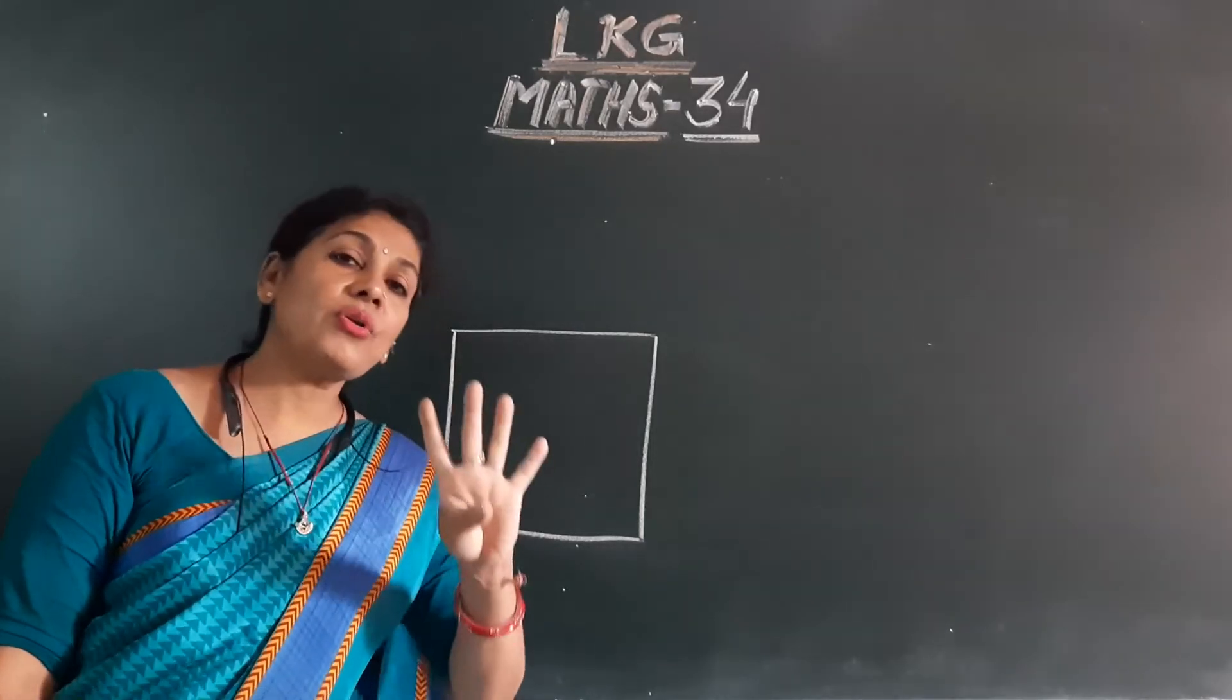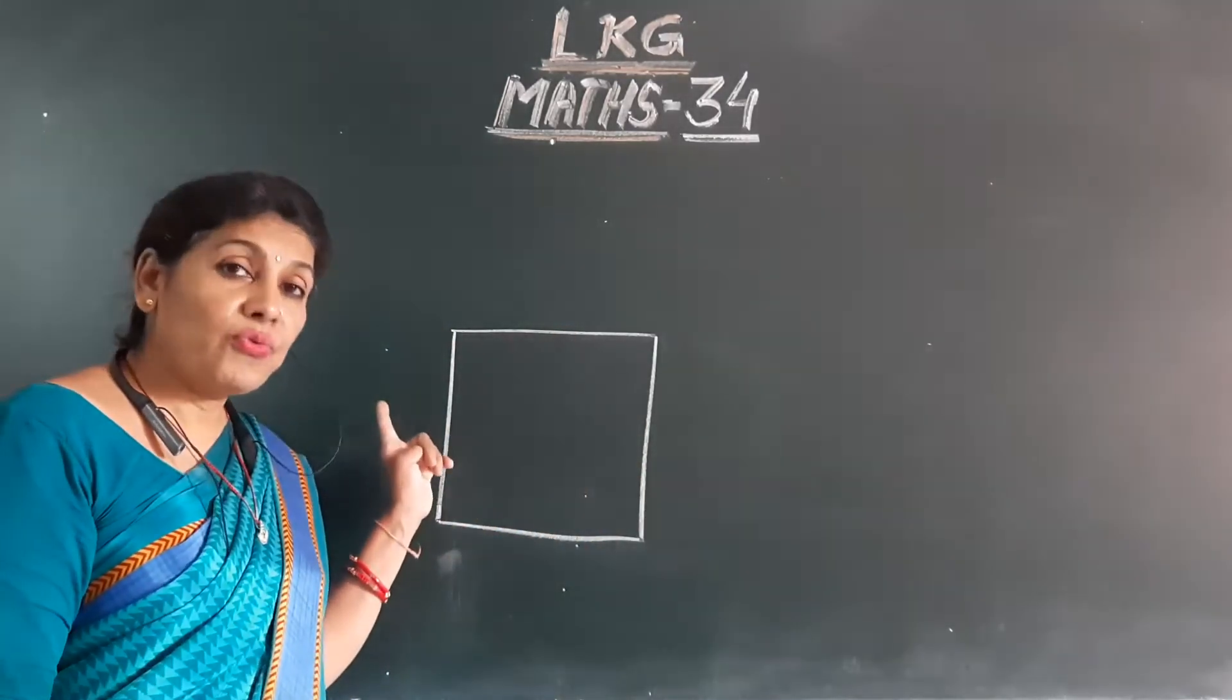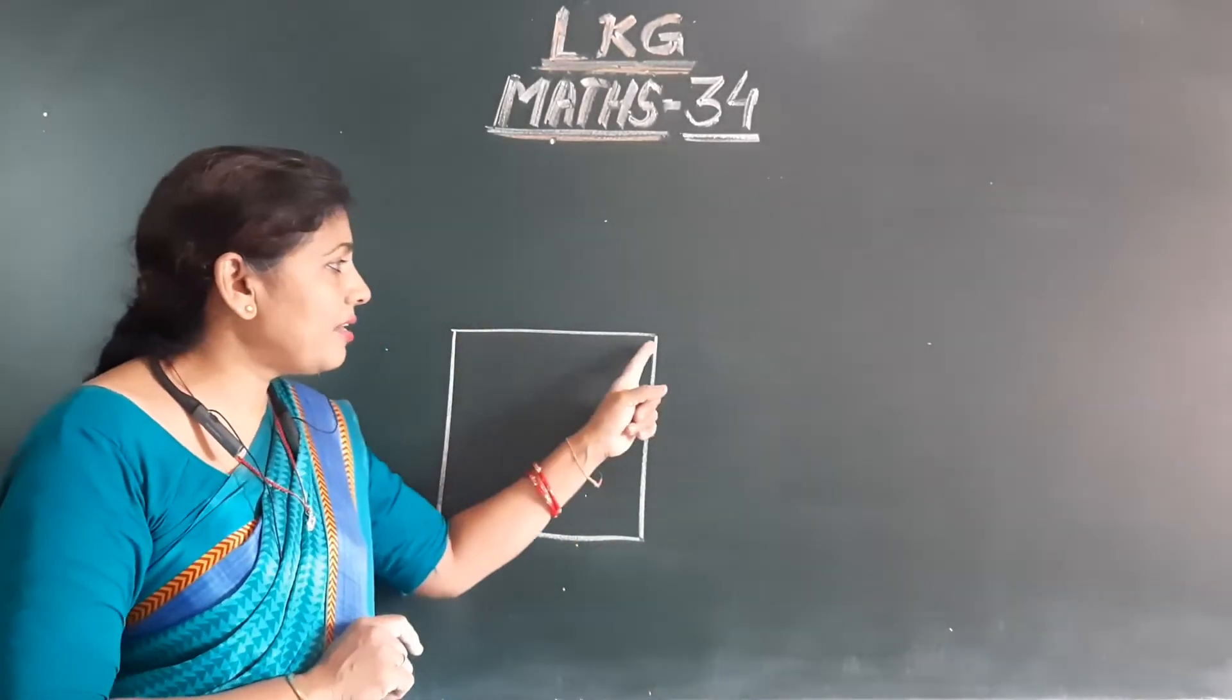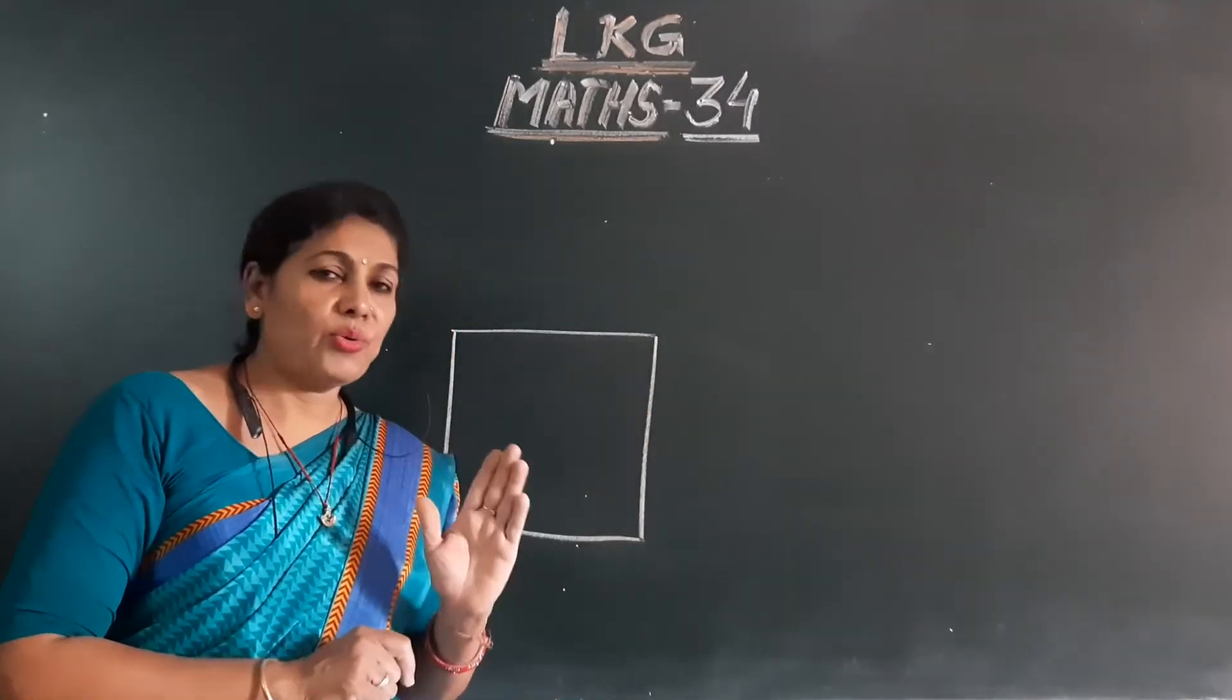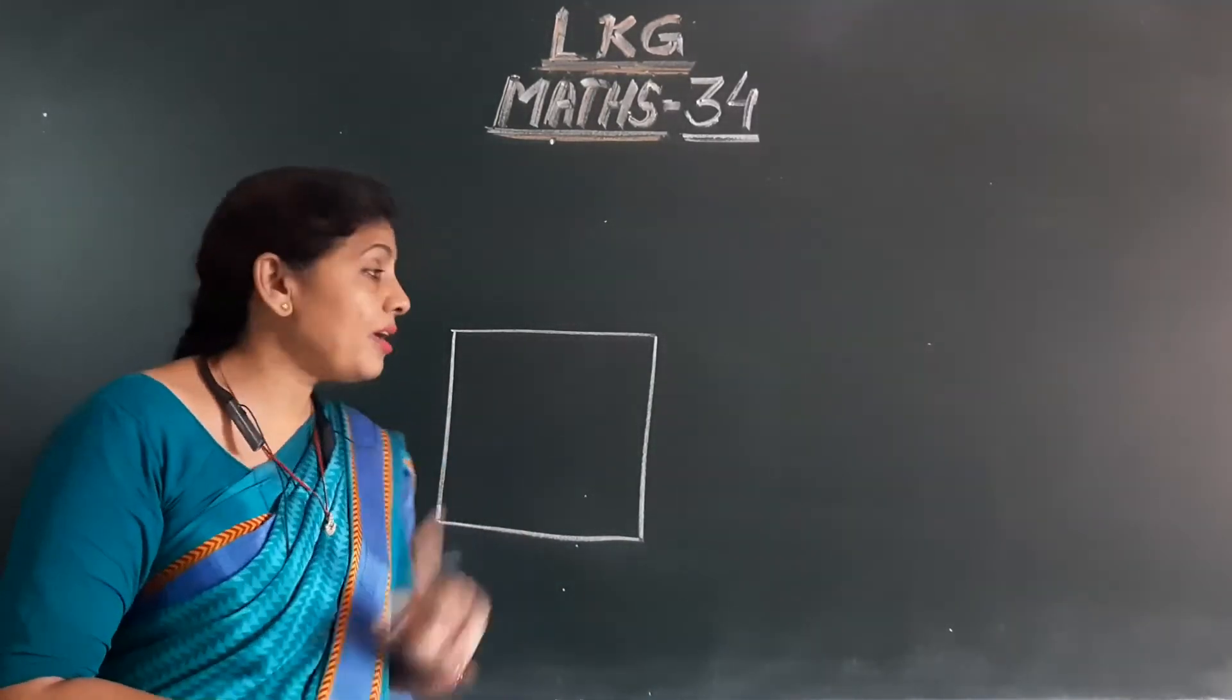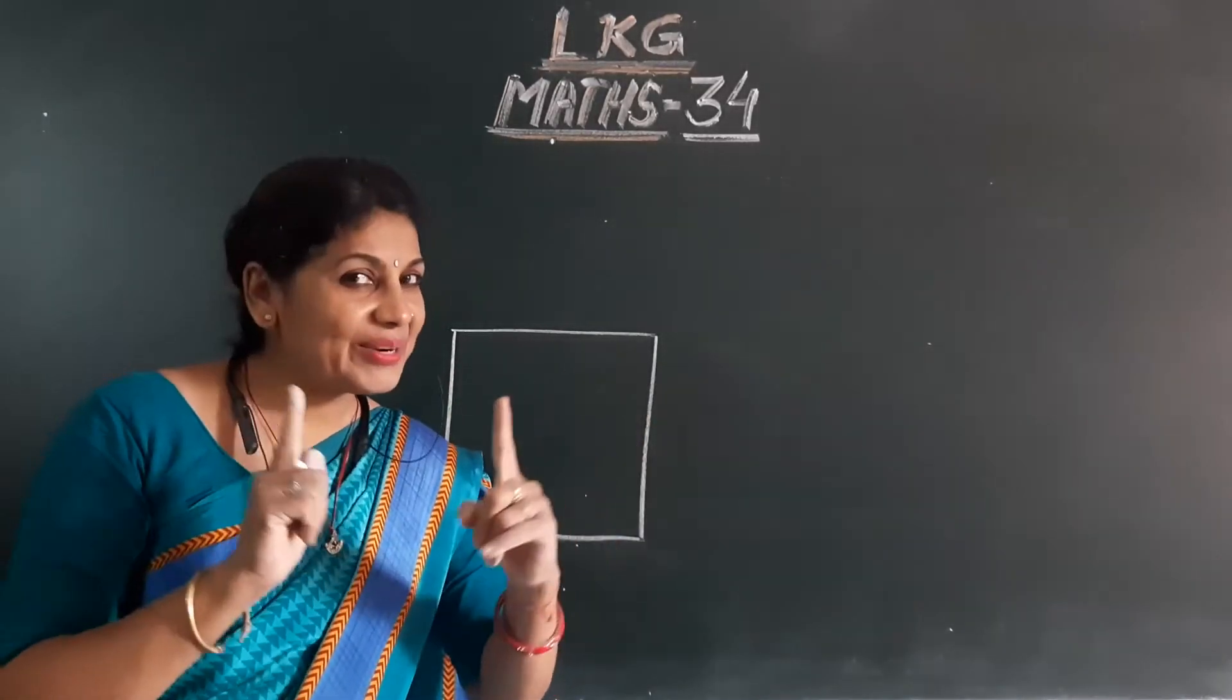But all four are equal lines. There are four lines - one, two, three, four. Four lines are in a square, but all four are equal lines. That means four lines are equal in square.